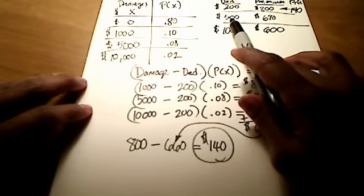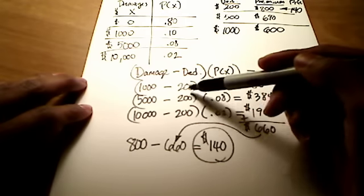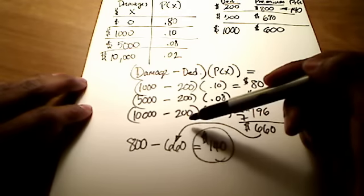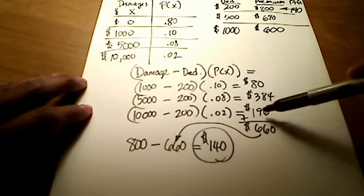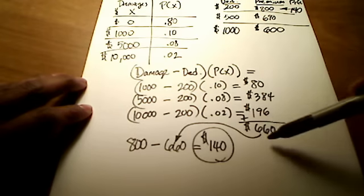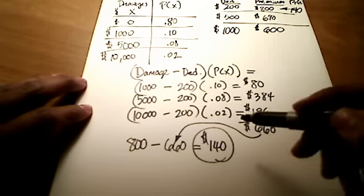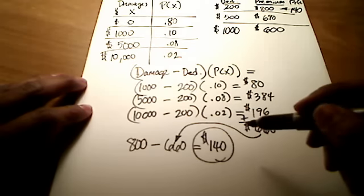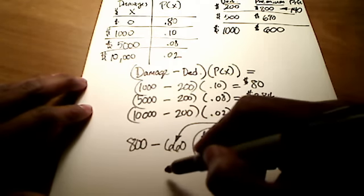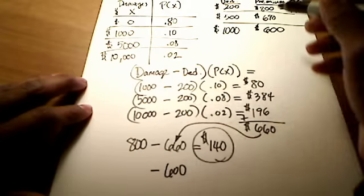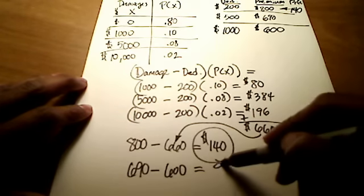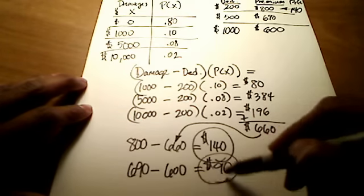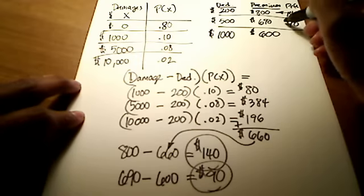That at a $500 deductible, and I would replace all of these numbers here with $500, these don't change. The probabilities don't change. And I would come up with some new totals over here that I could sum together. You'll see that that comes out to be, for a $500 deductible, a total of $600. I'll take that away from $690, and I'll get a $90 profit for the company here, $90 profit.